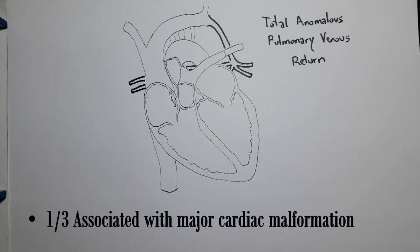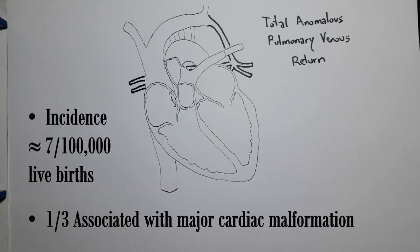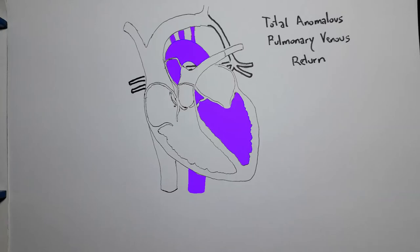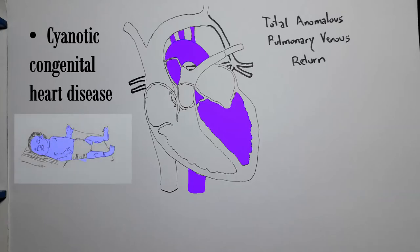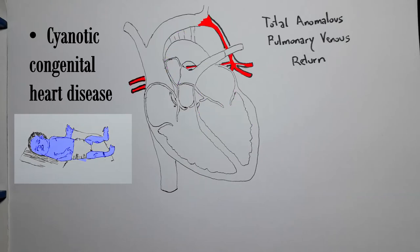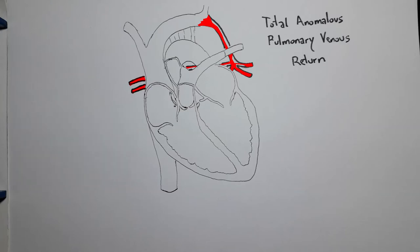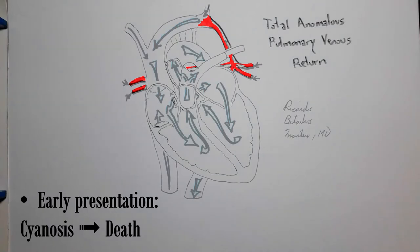Up to a third of TAPVR patients also have some major cardiac malformation. It's considered a rare disease, with an incidence of around 7 per 100,000 live births. Since the blood leaving the heart for the aorta is of mixed saturation, it's considered a cyanotic congenital heart disease. Although cyanosis occurs more frequently when there is some pulmonary venous obstruction — and remember that veins with anomalous pathways are more likely to be obstructed — this is a severity factor and can potentially lead to early death in the first weeks or months of life.